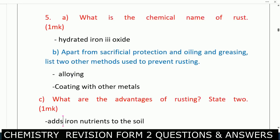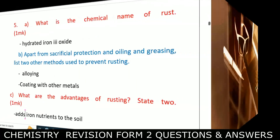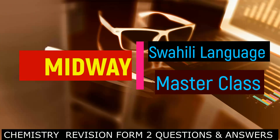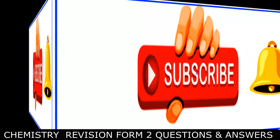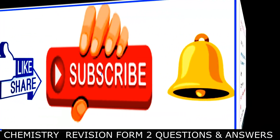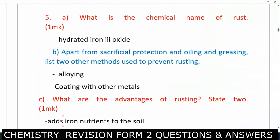Question five: what is the chemical name of rust? It is hydrated iron(III) oxide. Apart from sacrificial protection and oiling and greasing, list two other methods used to prevent rusting. You can use alloying; you can also use coating with other metals.